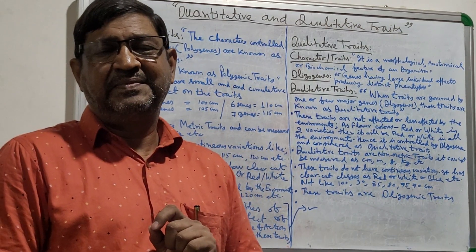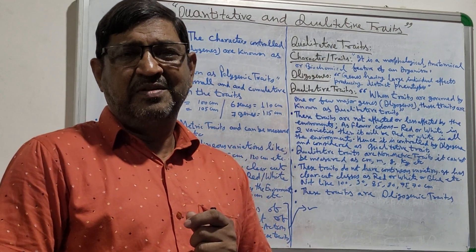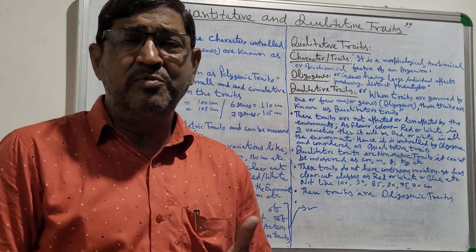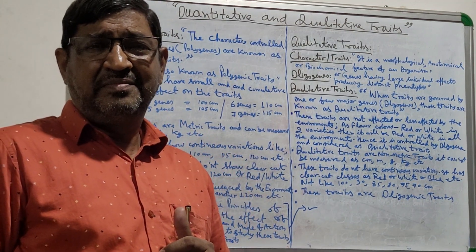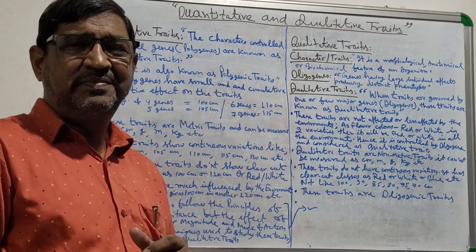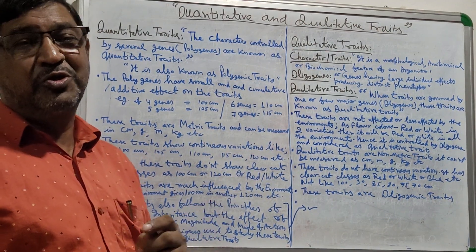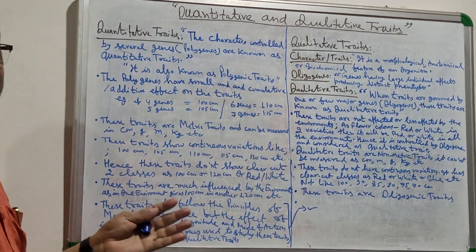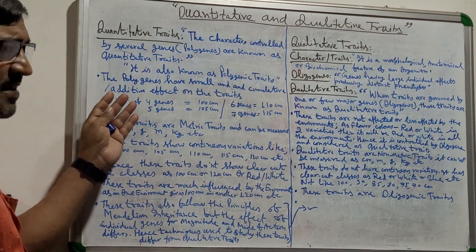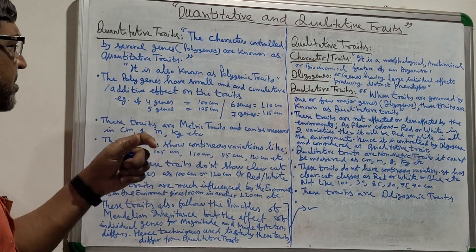Whether you are talking about the number of tillers, whether you are talking about plant height, whether you are talking about yield-contributing traits — majority of agronomic traits are polygenic in nature, controlled by polygenes. It is also known as polygenic traits. The polygenes have a small and cumulative or additive effect on the traits.